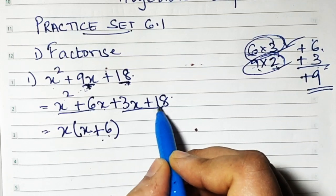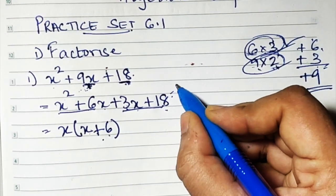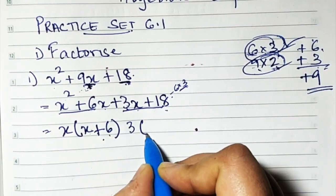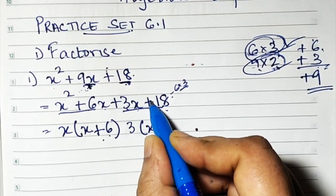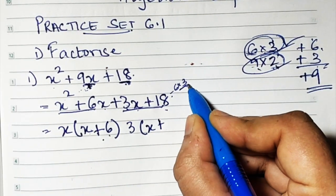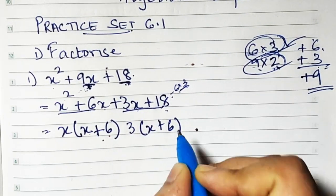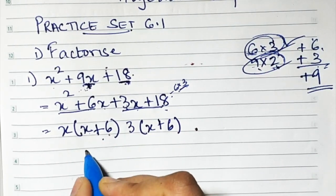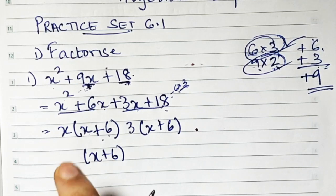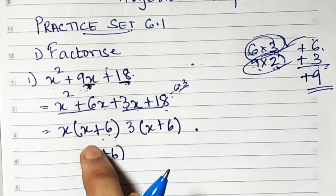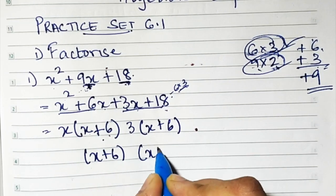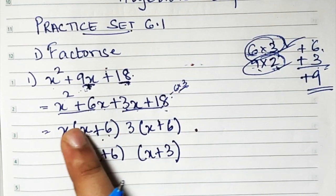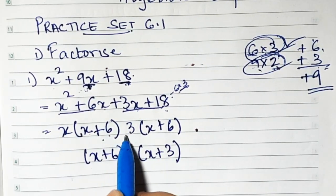Now in these two numbers, 3 is common because here you have 6 into 3. So 3 is common. Take 3 out. What remains inside? x plus — now from 18, 3 has gone out, so 6 remains — x plus 6. Now here you have x plus 6 and here you have x plus 6. So x plus 6 is common. Take one bracket as common and whatever remains outside the bracket, put that in the other bracket. So you have x plus 6 in one bracket and x plus 3 forms the other bracket.